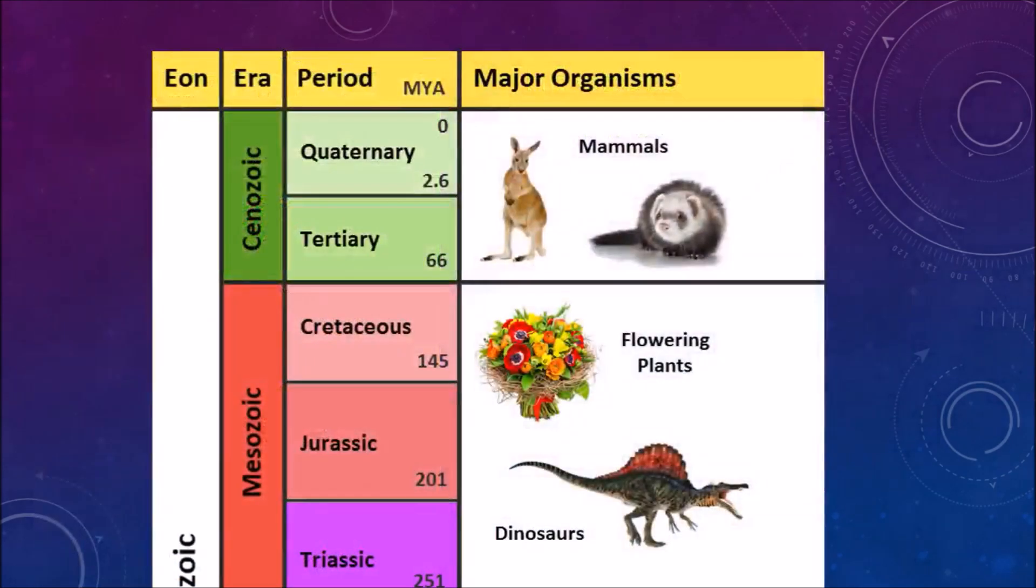The timescale shows the whole history of the earth chopped up into eons, eras, periods and epochs. They have some interesting names, which we will look at soon.